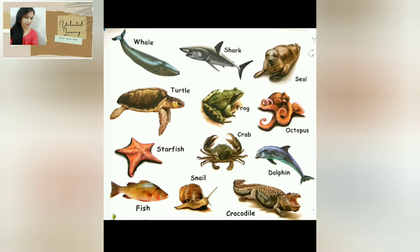Animals which live or grow in water are called aquatic animals. Examples: whale, fish, and dolphins. There are many water animals and sea animals, so let's start.